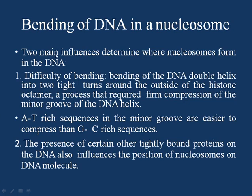There are two main factors which determine where the nucleosome places itself around the DNA. The first factor is the difficulty of bending: the bending of the DNA double helix into two tight turns around the histone octamer is required. This process requires firm compression of the minor groove of the DNA helix — the DNA minor groove must be compressed for the DNA to wrap around the histone core in two turns.